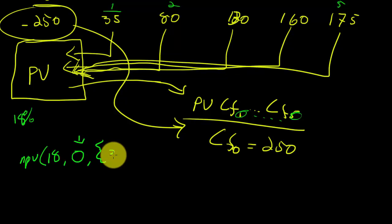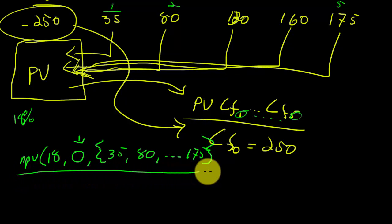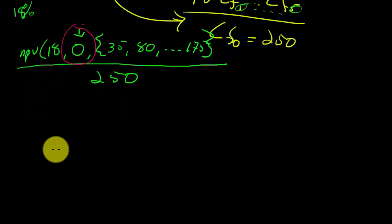And then I type in my cash flows, 35, 80, et cetera, 175, and I close it up. So this is my equation for figuring out the denominator on top for my TI-80. And on the bottom, I only do 250. Please note that this makes this calculation a calculation of just the future cash flows.